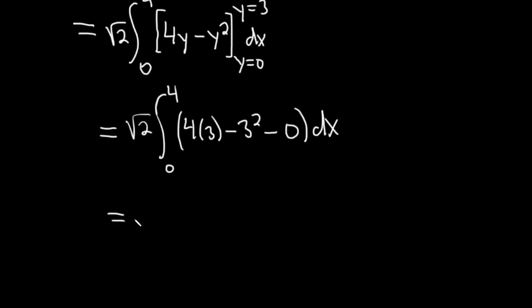This is equal to the square root of 2, integral from 0 to 4. It'll be 12 minus 9, so it's going to be 3. 3 dx. Integrate that, so we get square root of 2 times 3x, right? Because it's just a constant. So when you integrate it, you just get an x. And we're going from 0 to 4. Almost done.